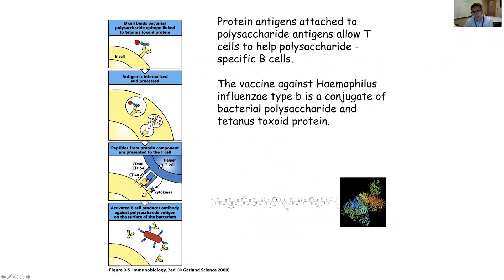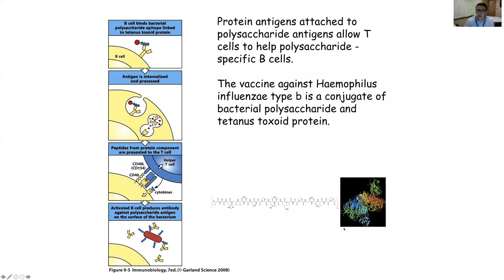This is important because you can trick the immune system into generating antibody responses. The classical example is the vaccine against Haemophilus influenzae — a polysaccharide that can't be seen by T cells. The vaccine conjugates the polysaccharide to tetanus toxoid, allowing T cell help to the protein even though the T cell can't recognize the portion the B cells are specific for. The take-home message: T cells have to recognize the protein, but not necessarily the same antigen as the B cell.